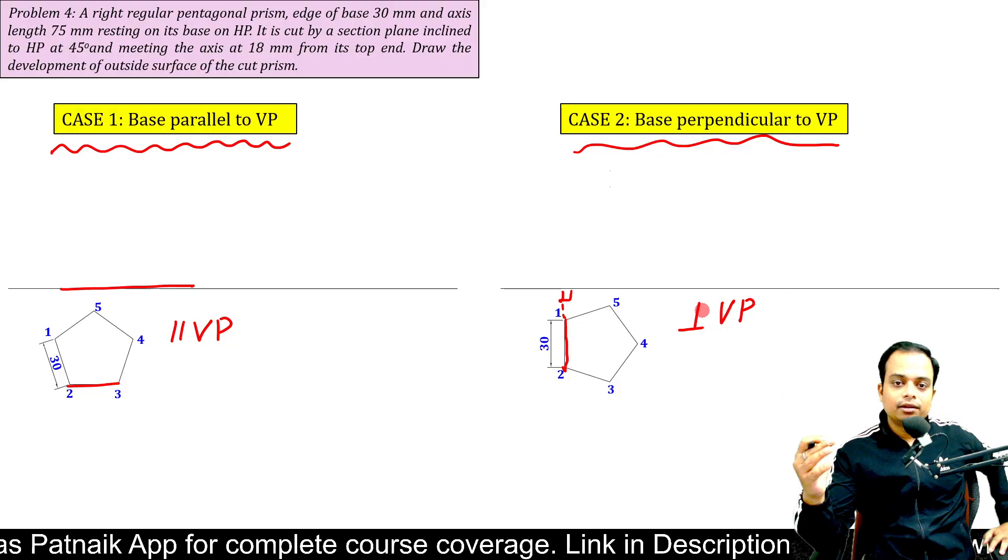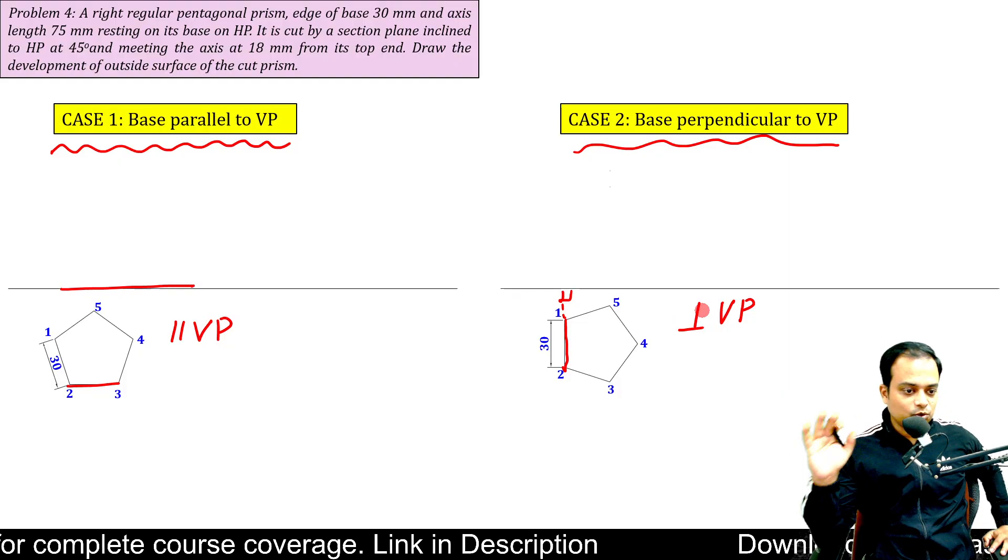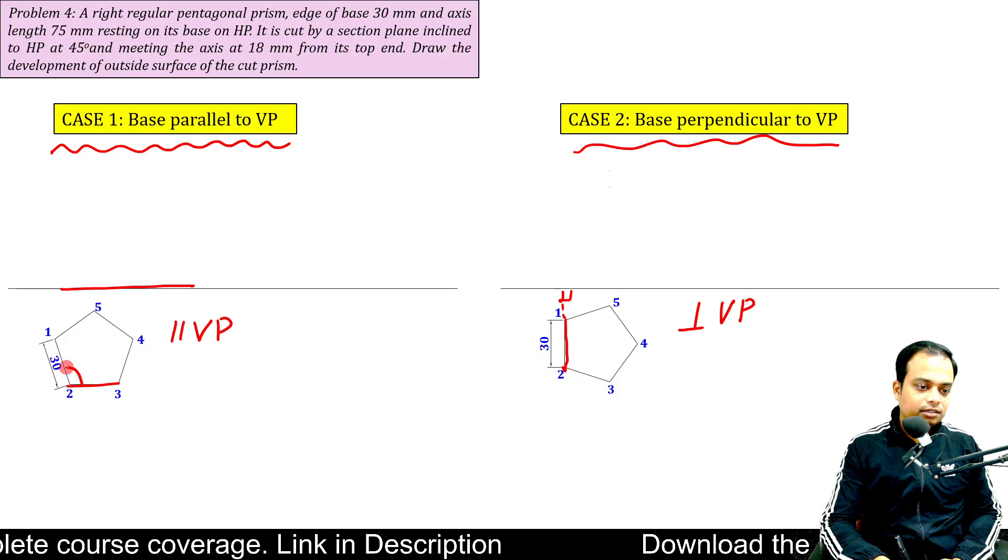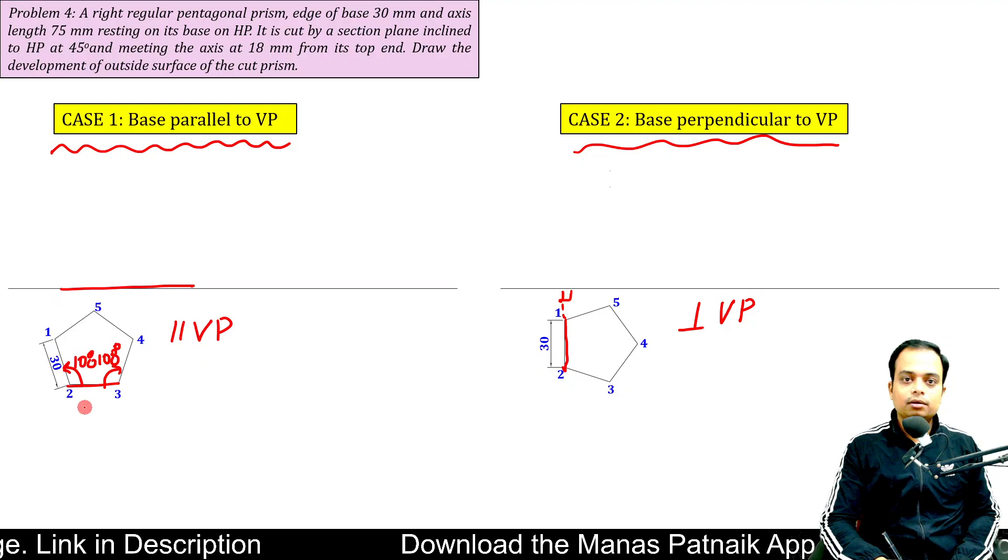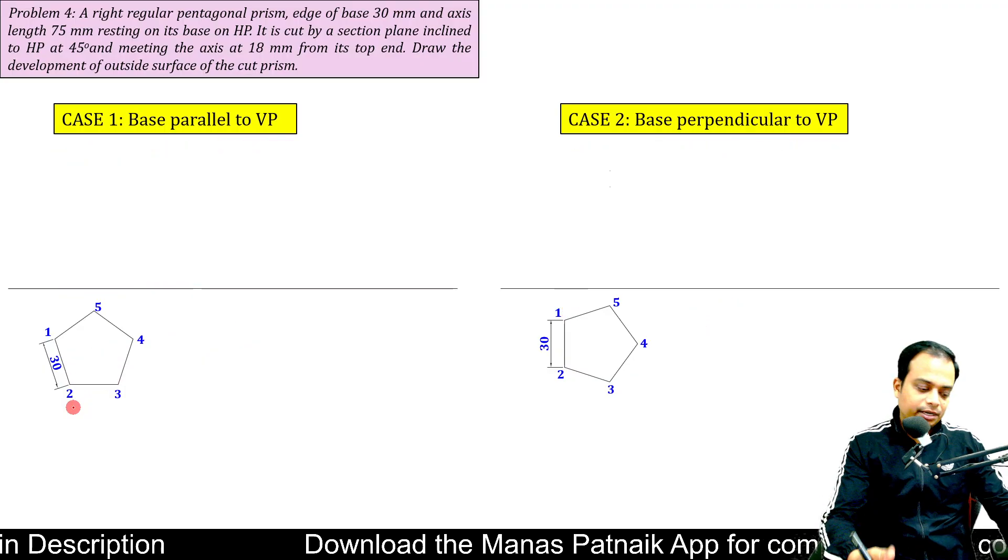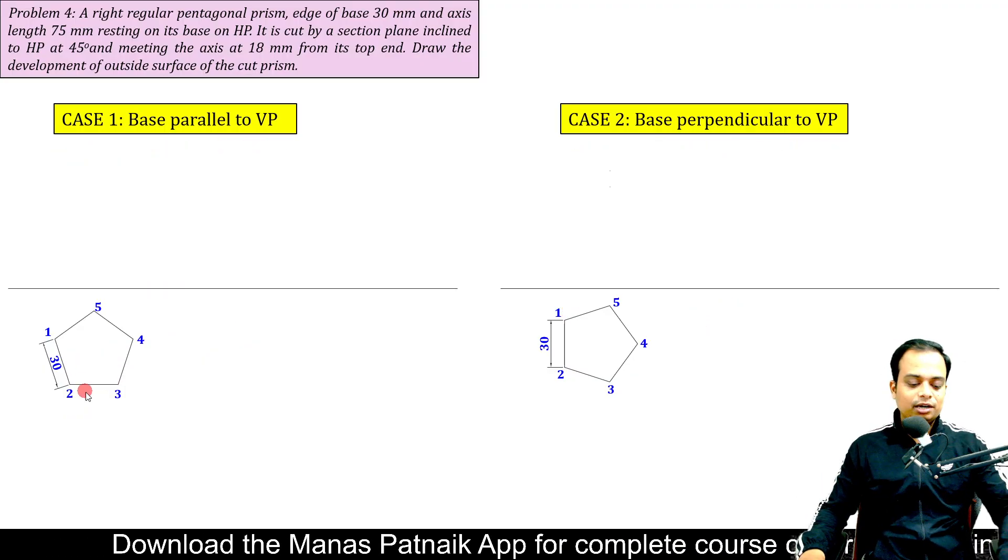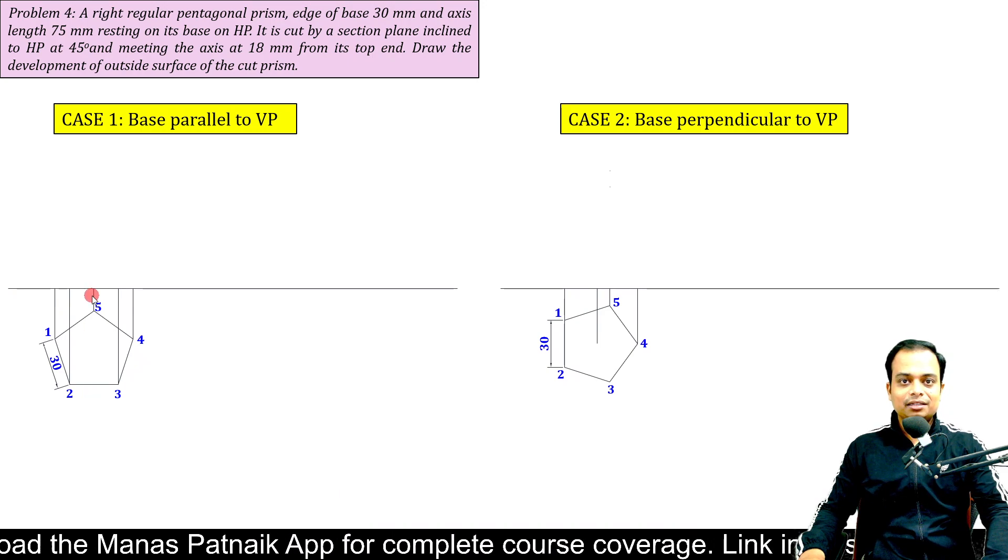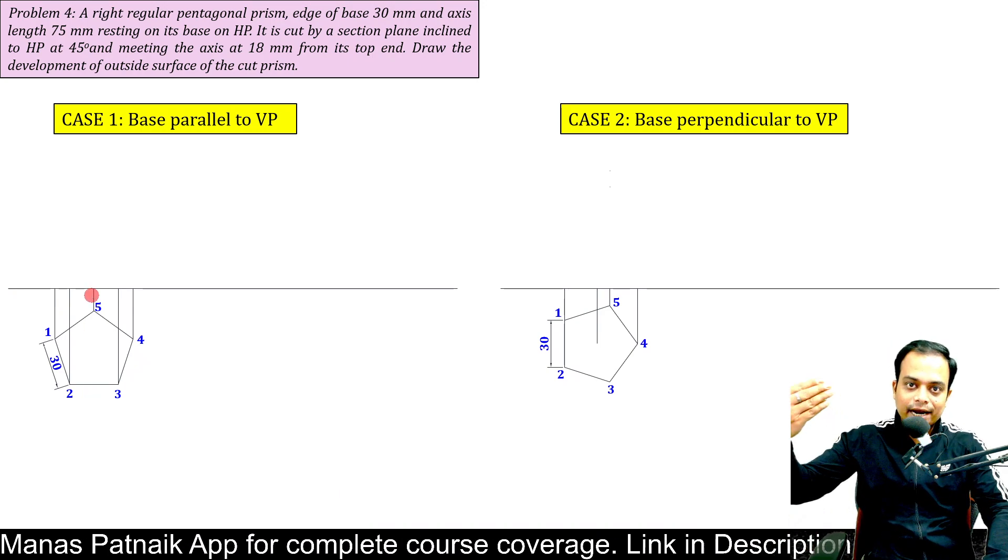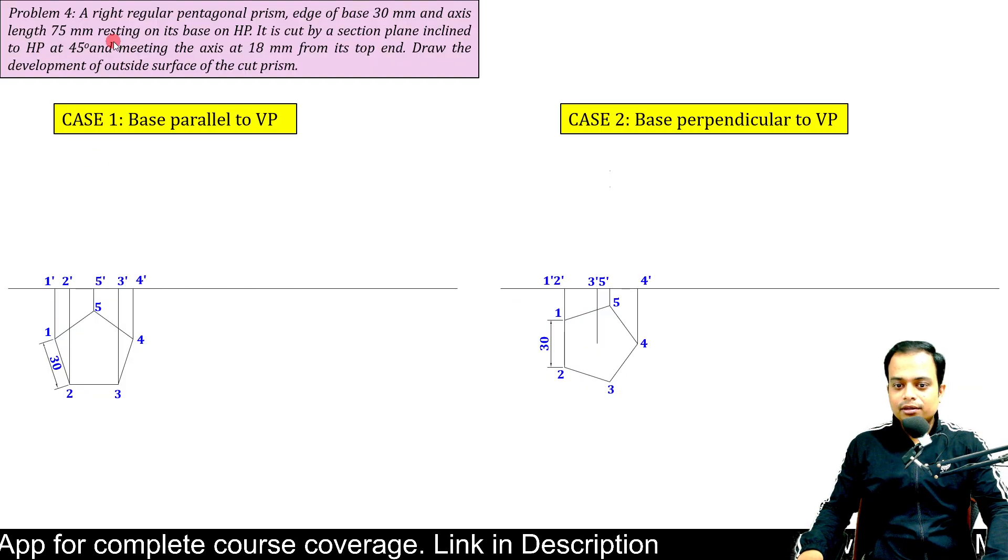So far, so good. How much is this angle? So this is equal to 108 degrees. 108 degrees. I hope, I sincerely hope that you will be able to make this pentagon. All right. Now, let me make the projector lines. What is the height? The length of the axis of the prism is 75.